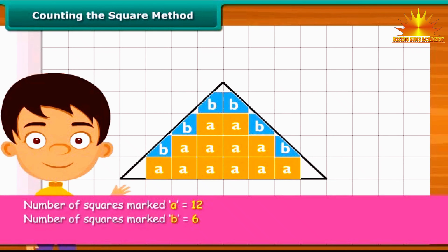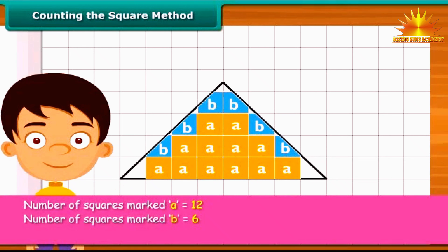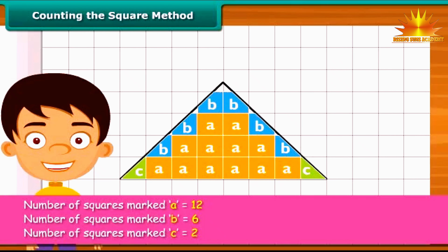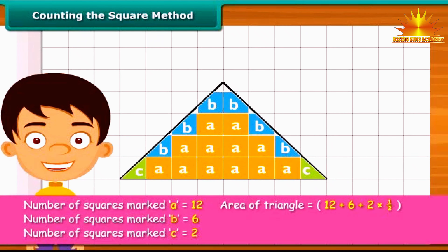Now count the squares whose exact half part is enclosed by the triangle and mark each of these as C. Ignore the squares whose less than half part is enclosed by the triangle. The area of the triangle is 19 square centimeters.